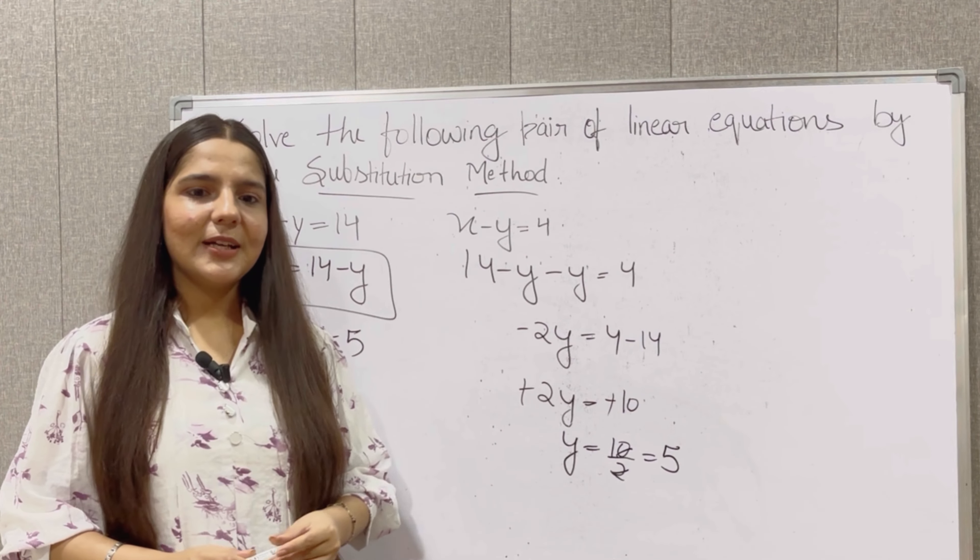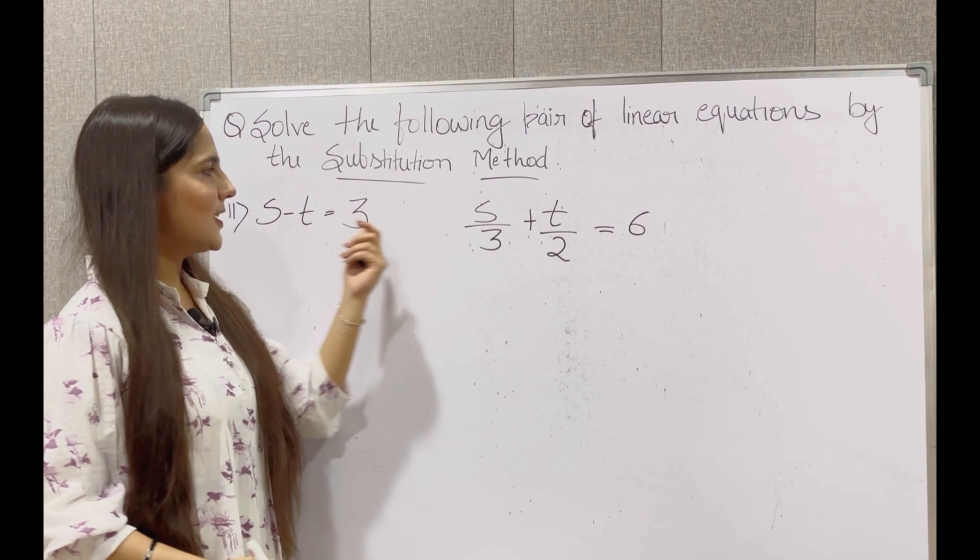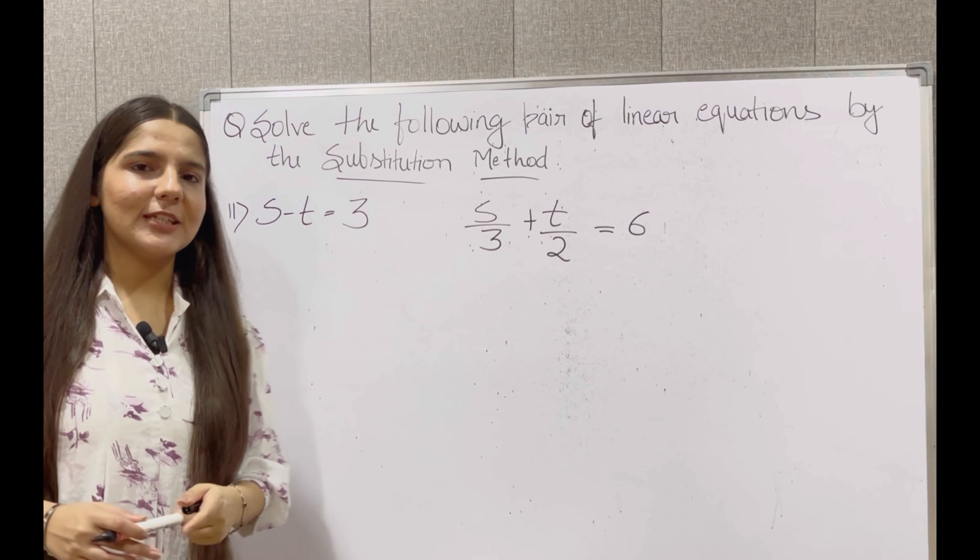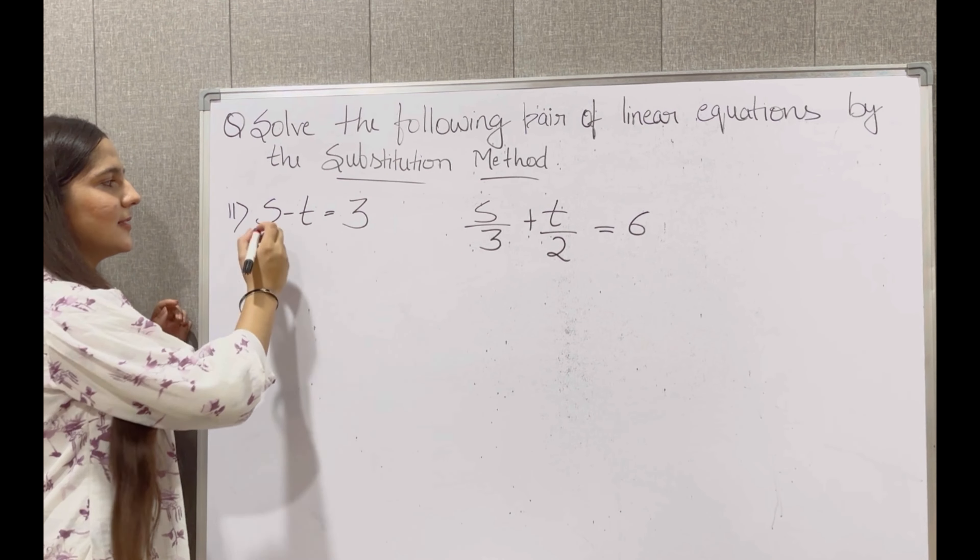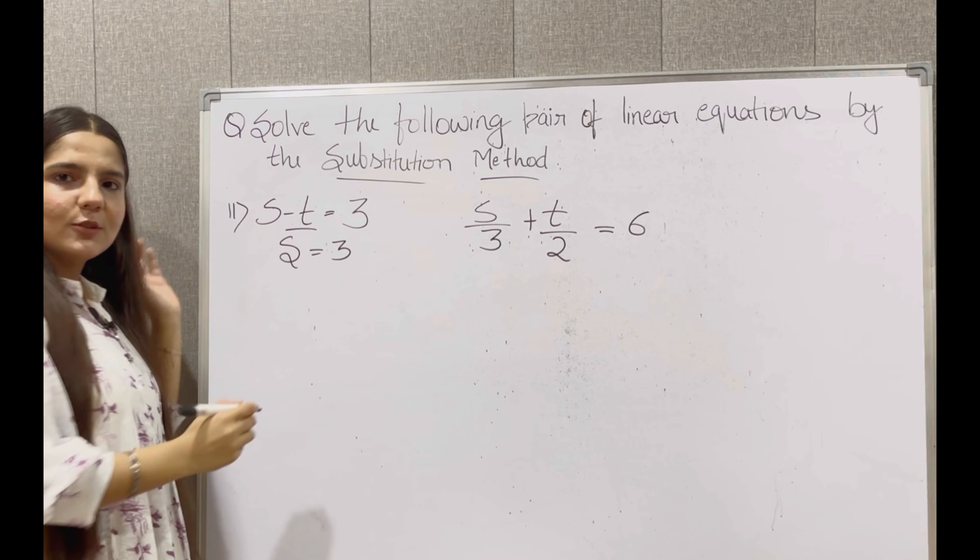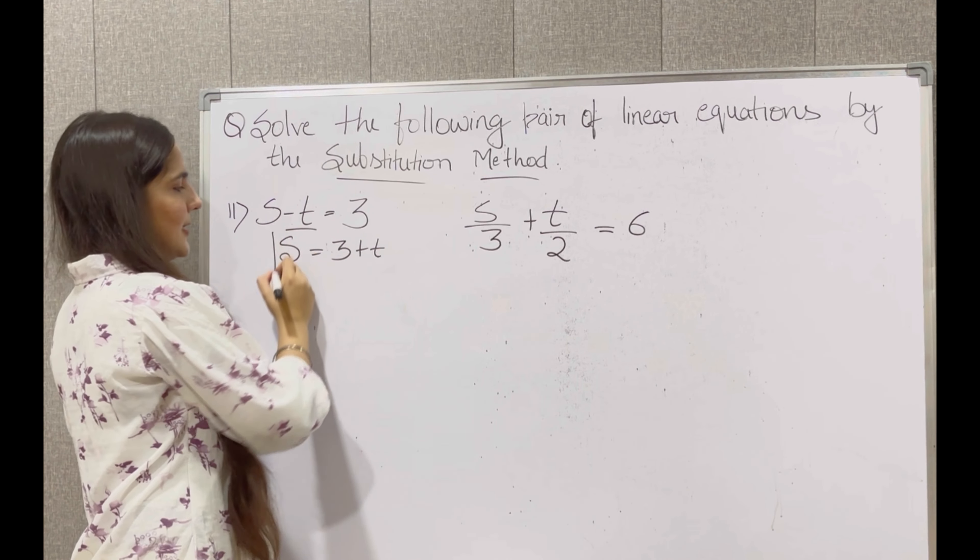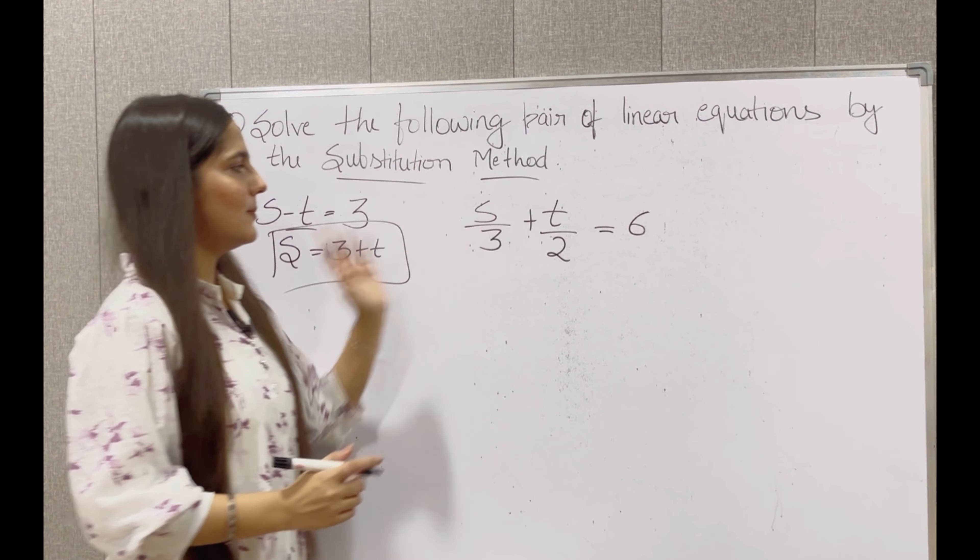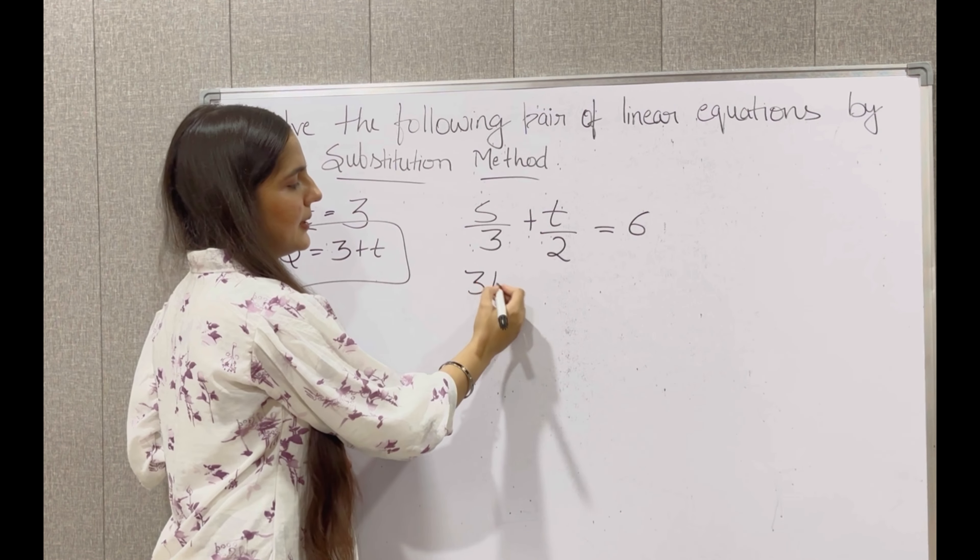Let's solve the second part. Second question is s minus t is equal to 3 and s upon 3 plus t upon 2 is equal to 6. So same method follow. So s is equal to 3 plus t, transfer so we will get plus t. So s's value is 3 plus t. Now we will put this value in this equation.